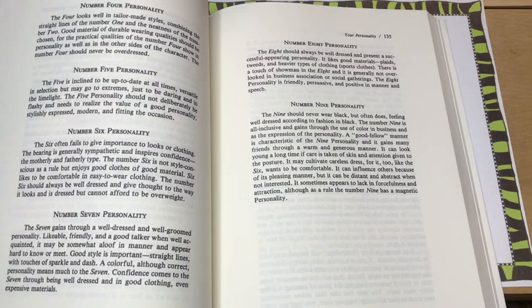We have the number 6. It says often fails to give importance to looks or clothing, maybe a little sloppy. Generally sympathetic and inspires confidence in others though. Might be the motherly, fatherly type. A number 7 personality gains through a well-dressed and well-groomed personality. They're likable, friendly, they're a good talker. May be somewhat aloof in manner and appear hard to know or meet.